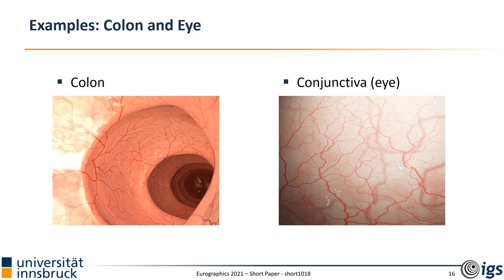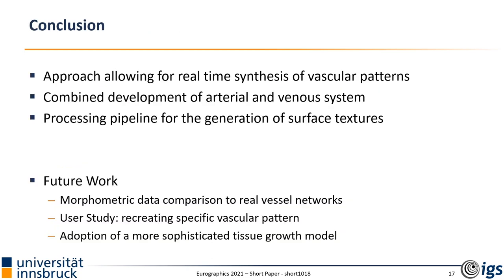To summarize, we synthesize blood vessels by modeling the overall growth process as a competition for space. During the development, we enforce local geometry constraints on the vessels based on well-known bifurcation optimization principles and visual characteristics of real vascular patterns. In addition, we propose an interdependent growth model for the arterial and venule system, derived conceptually from the function of the venule system to transport waste products away from the tissue. We also outline a visualization pipeline to create corresponding vessel geometry and surface textures for organs.